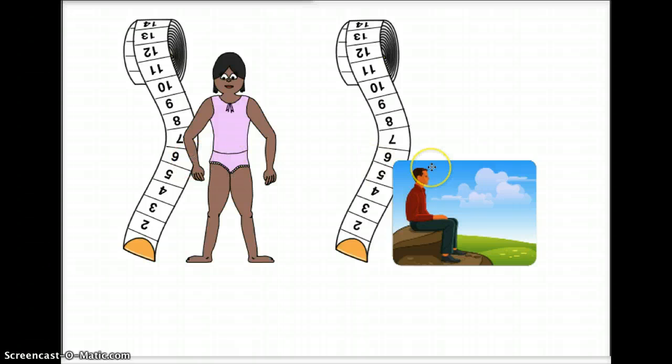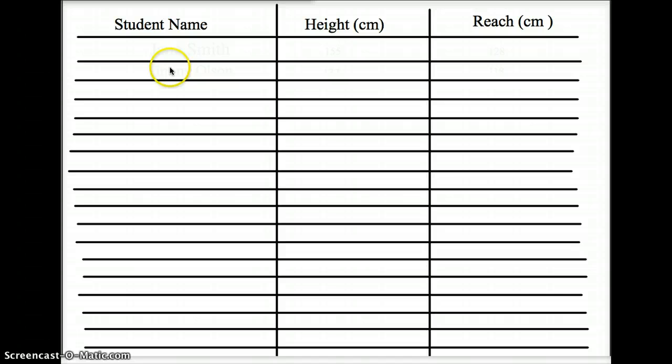After you have those two measurements, you're going to record them. For example, maybe your name is Jane Smith, and you measured your height at 155 centimeters, and your reach was 128 centimeters. So Jane is fairly tall at 155, with a good reach at 128.